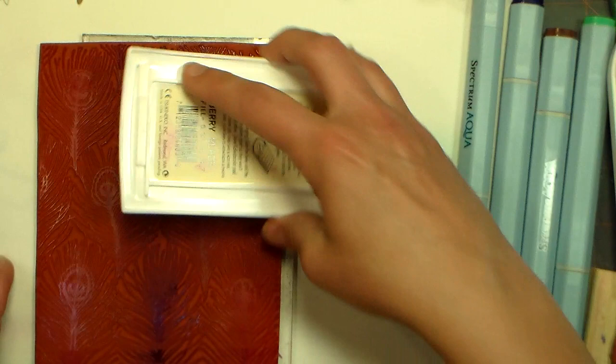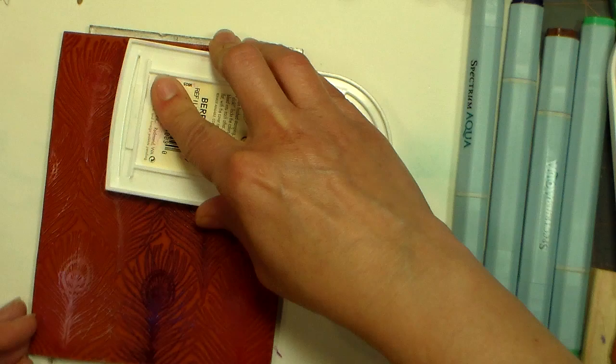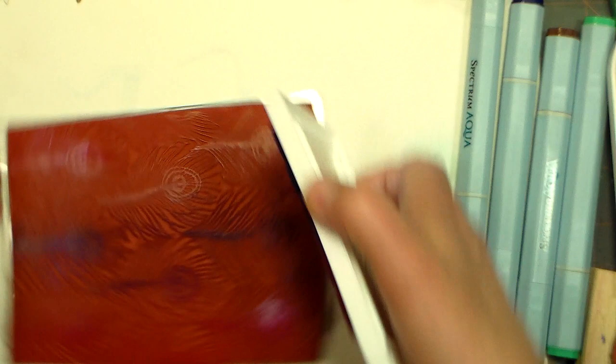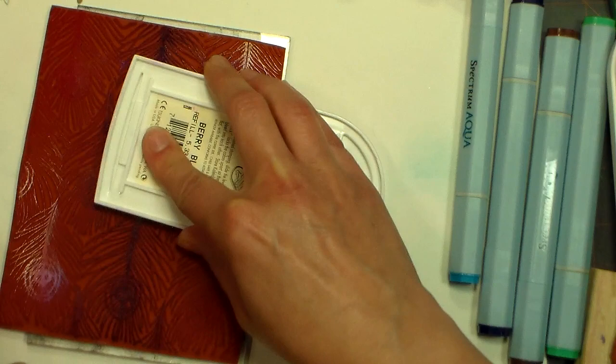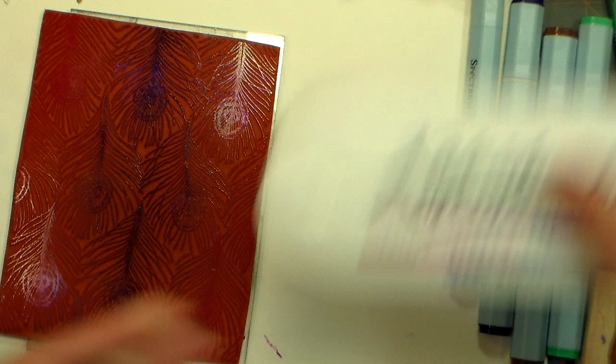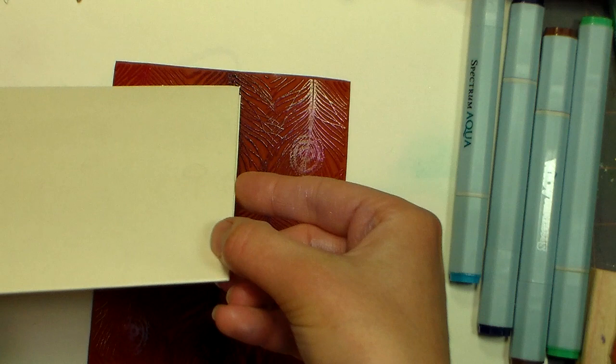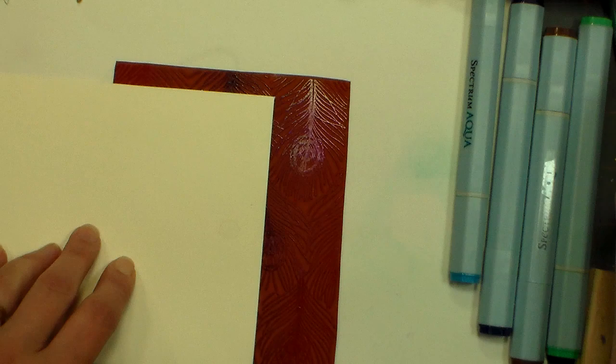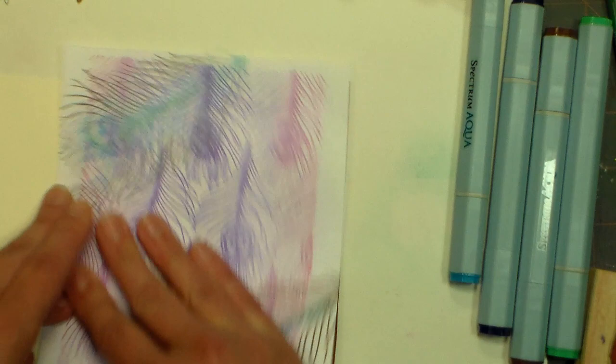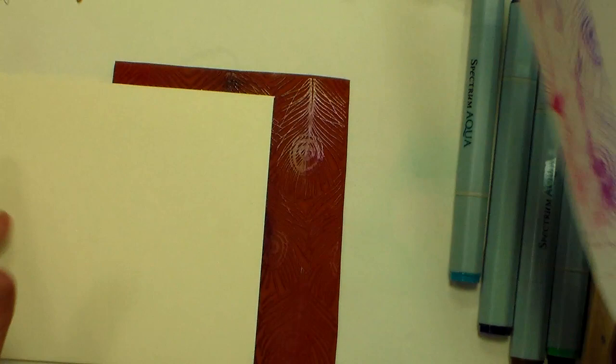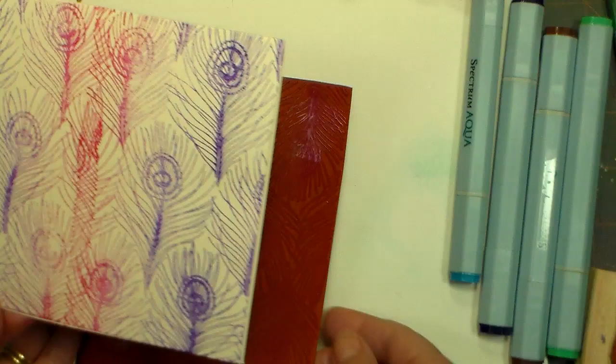So because this card base is bigger than my stamp, I'm gonna have to stamp it a couple times. I'm just gonna place that down like that, grab a piece of scrap paper, and rub over it. Okay so I've got half of it stamped. I'm gonna ink it up one more time and do the same method.